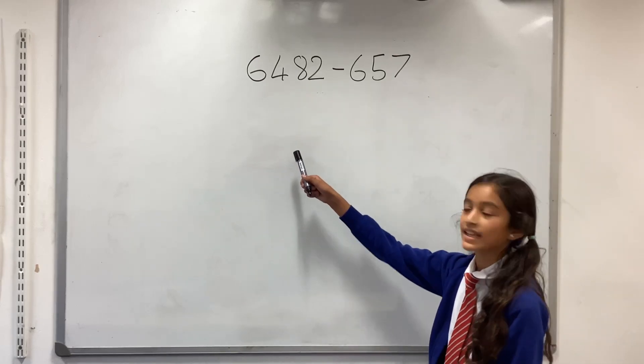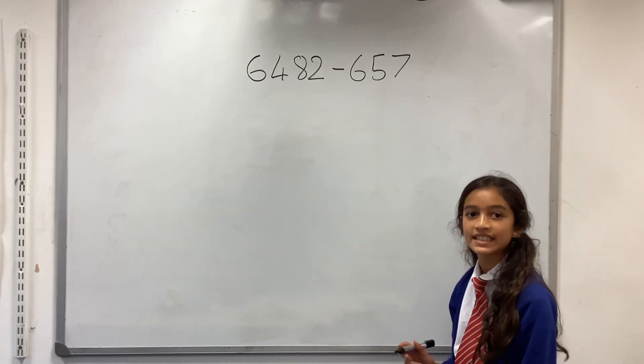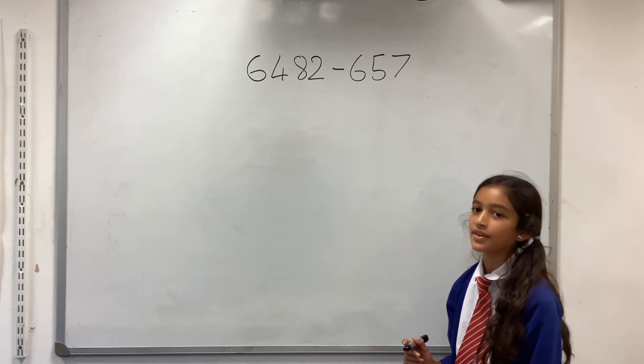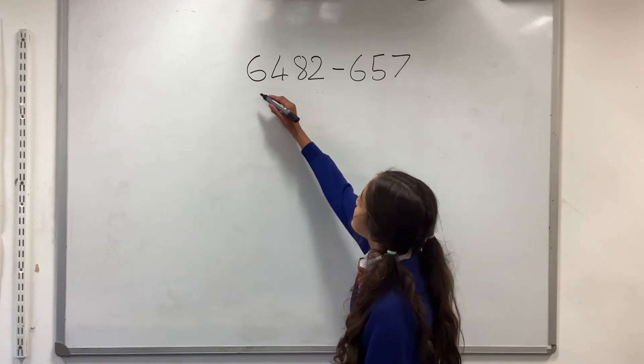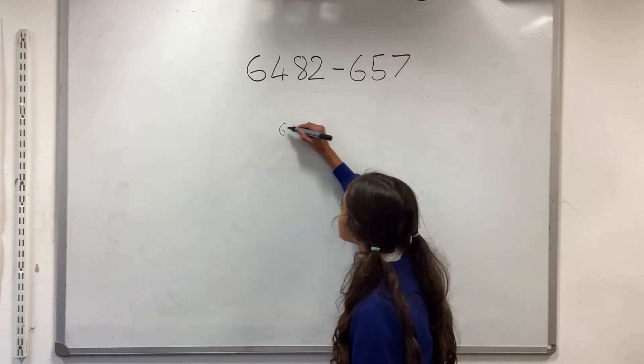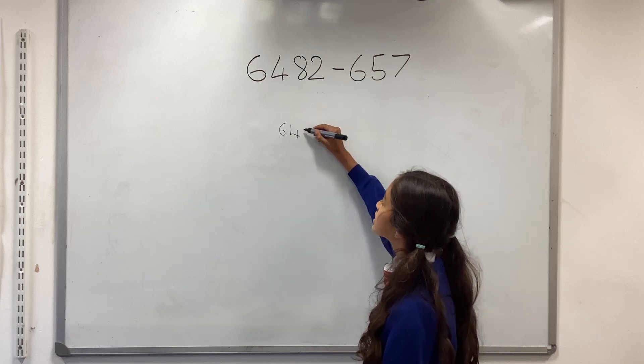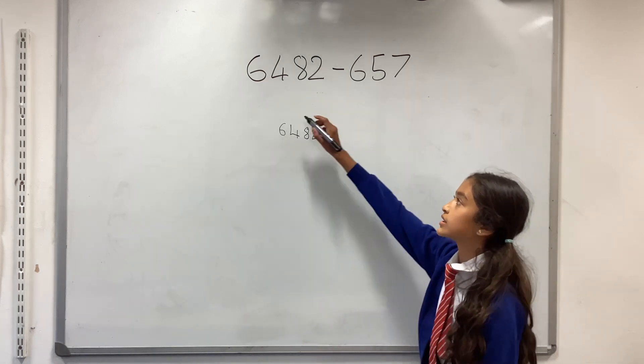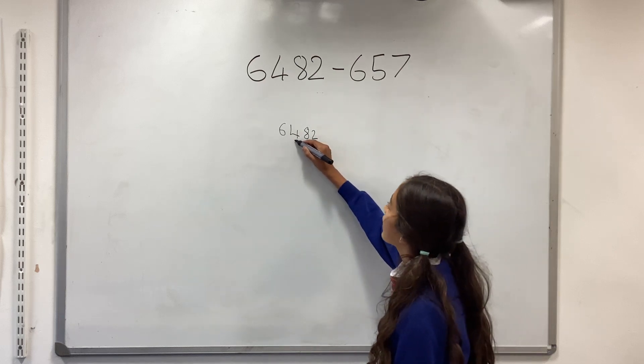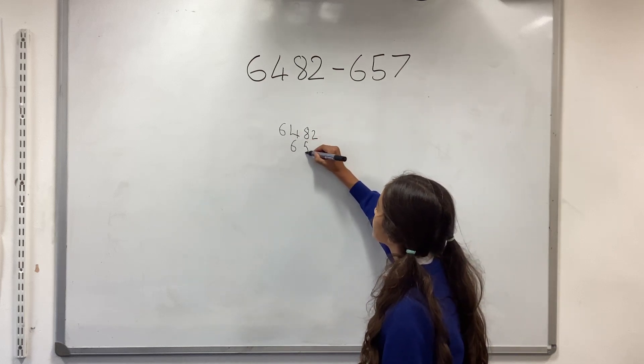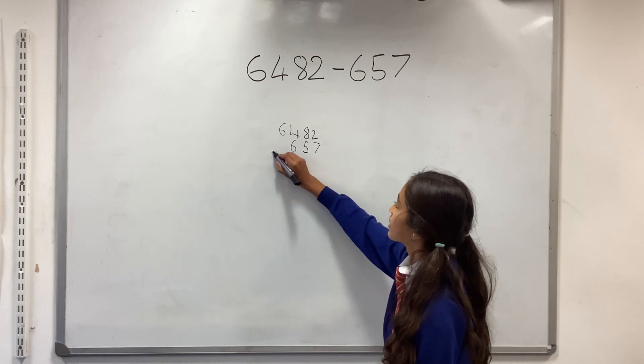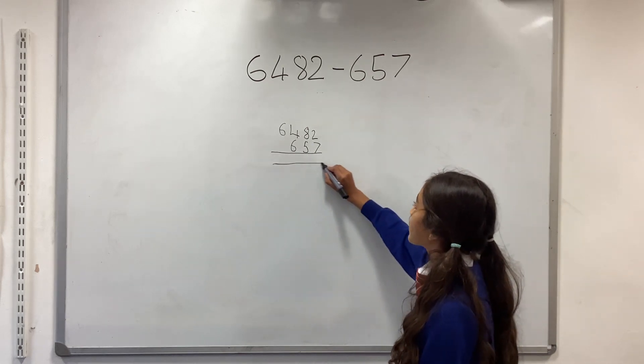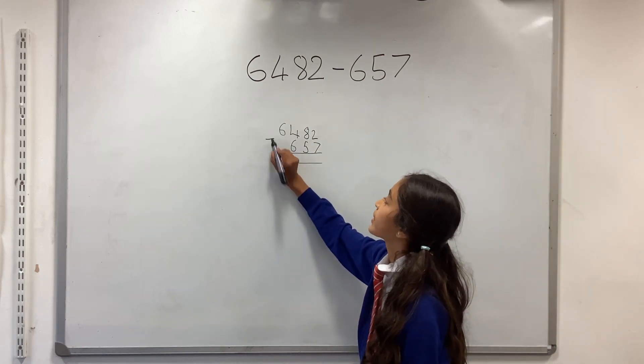Okay, so we're doing 6482 take away 657. So this is 6482, but this is 600, not 6000. You do a column here, 657, your lines, and we're taking away, so you have to do your takeaway sign just in case you forget.